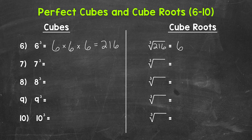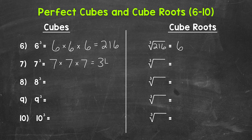Let's move on to number seven where we have seven cubed. That means seven times seven times seven. Seven times seven is forty-nine, times seven equals three hundred forty-three. Seven cubed equals three hundred forty-three, which means the cube root of three hundred forty-three equals seven.